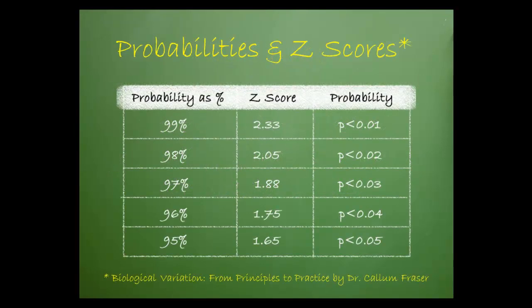Dr. Cullum-Frazier provided the following example of probabilities and z-scores in his text, Biological Variation, From Principles to Practice.